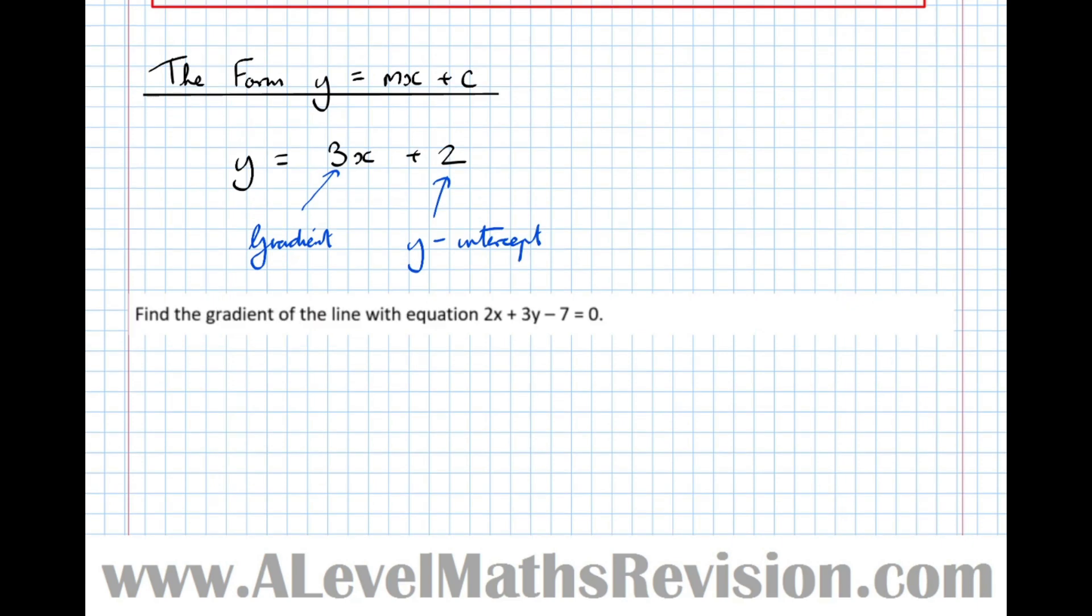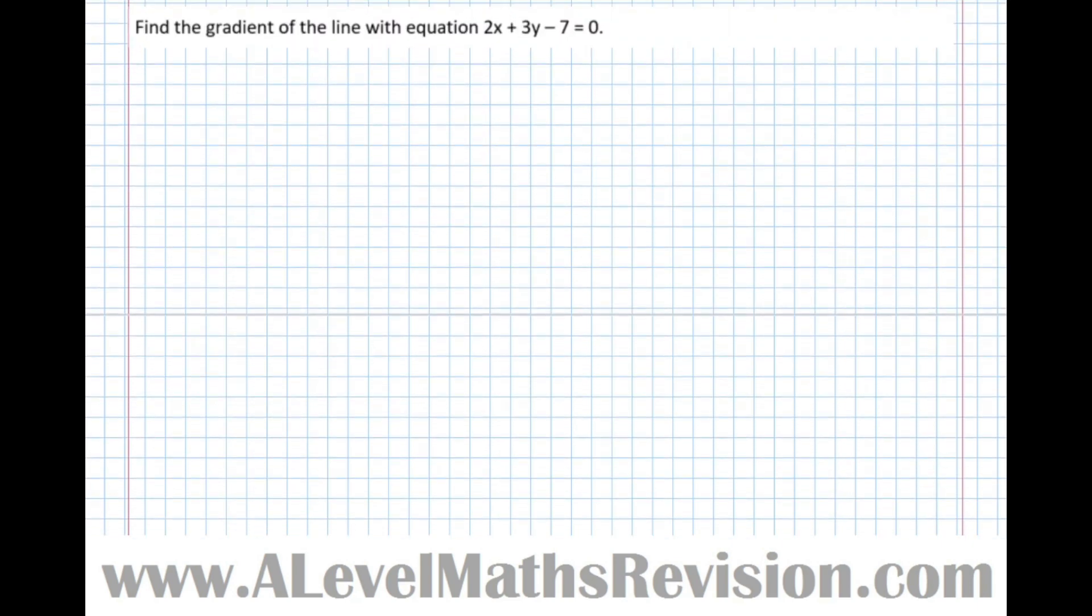However, presented with a question like this, you may not be so familiar. Find the gradient of the line with equation 2x plus 3y minus 7 equals 0. The key here is to rearrange it so it says y equals something x plus something. If I take everything to the other side, I get 3y equals minus 2x plus 7. Dividing by 3, y equals minus 2 thirds x plus 7 over 3. Therefore, the gradient is the number in front of x, which is minus 2 thirds.